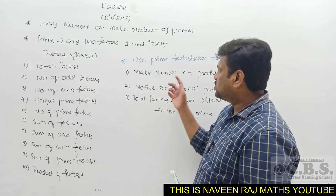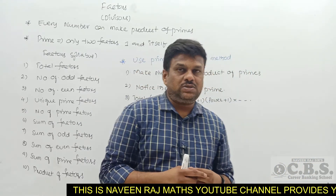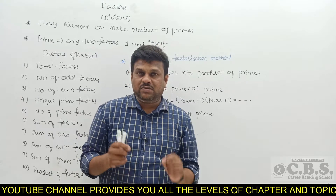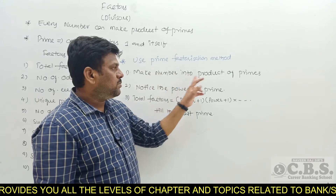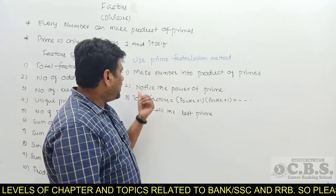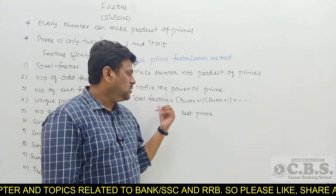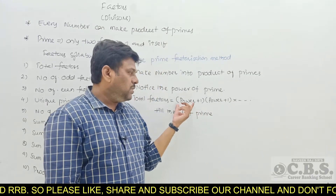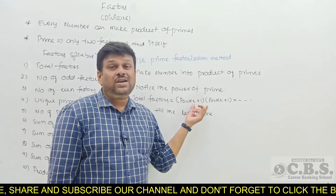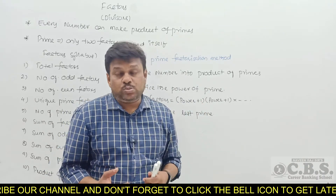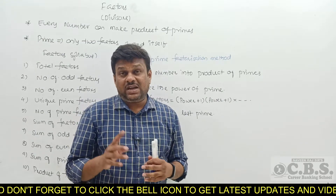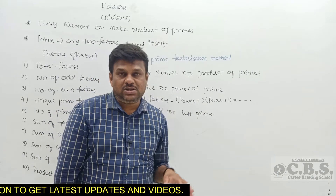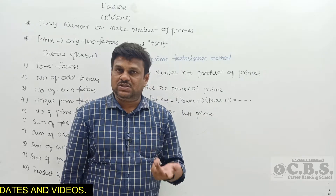All these ten topics depend on one concept called the prime factorization technique. In this technique, first make a number as a product of primes, because any composite number is definitely formed with the help of only prime factors. Each number can be made a product of primes till the last factor is prime. Then note the powers of the appropriate primes. Total factors equals (power of prime + 1) × (power of other prime + 1), and so on. The power value indicates how many times it is repeated, and the '+1' accounts for the factor 1.